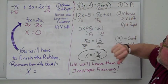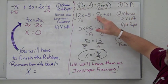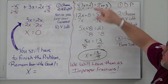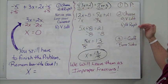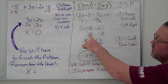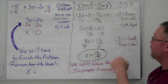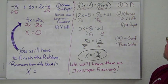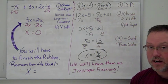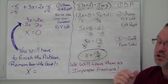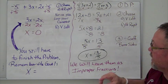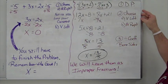Here's another distributive property example. We distribute and choose to move the variable to the left, then move the number to the right. After simplifying, we divide both sides by the coefficient, and that gives us a fraction. We leave improper fractions as improper fractions — if you're asked to check, it's much easier that way, since you'd have to convert a mixed number back to an improper fraction anyway.